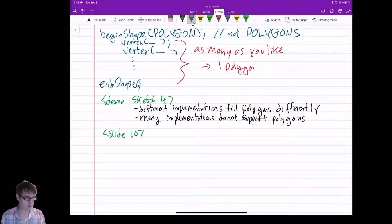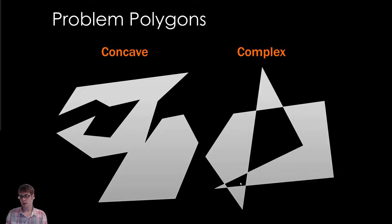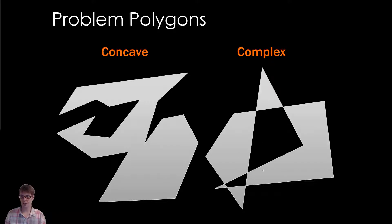Let me show a slide. Here's an example — a concave polygon, and you see it gets really tricky. Polygons can do anything. This is a complex one where it crosses itself, and in this implementation you can see certain holes filled and others not. It gets kind of complicated, but we'll come back to that later.